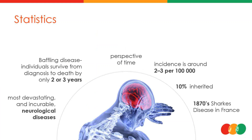The statistics of MND are about 2 to 3 per 100,000, and of those about 10% are inherited. It's a baffling disease. From diagnosis to death is approximately 2 to 3 years, and it affects both the neural and muscular systems. The first recorded case of MND, also known as Charcot's disease in France, was in the 1870s.